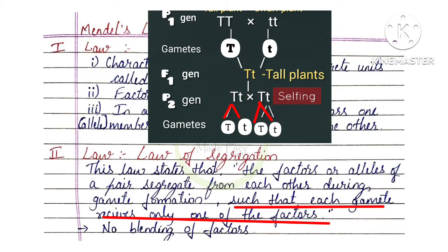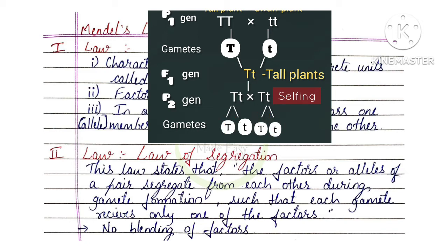Every gamete has the same alleles — the alleles are separate. There is no blending of factors; this is a mixture of alleles that separate. Dominant alleles and recessive alleles separate from each other.